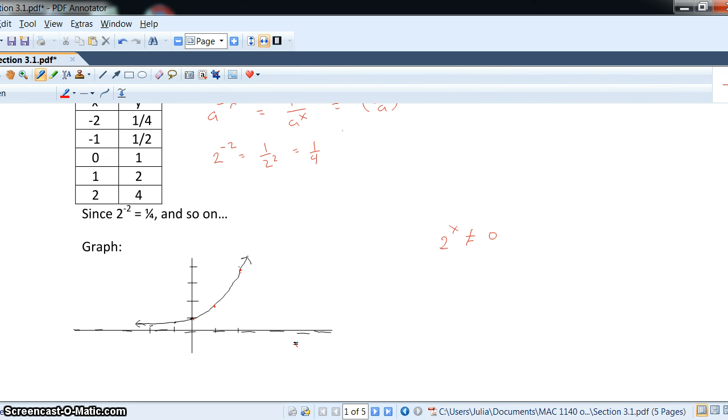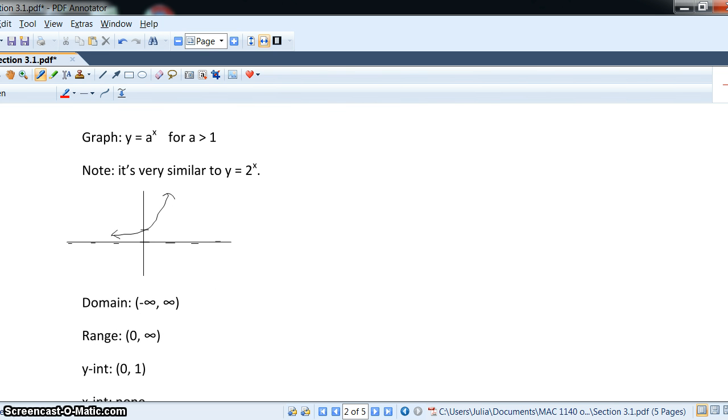And so, y equals 0, the x-axis, would be a horizontal asymptote for this exponential function. So, this is a model of an exponential function of any growth. As long as we don't have shift, any y equals a to the x, as long as the base is bigger than 1,